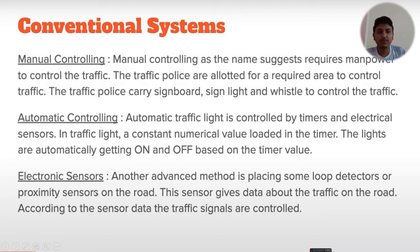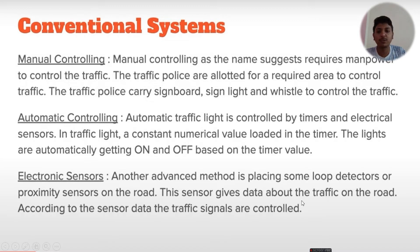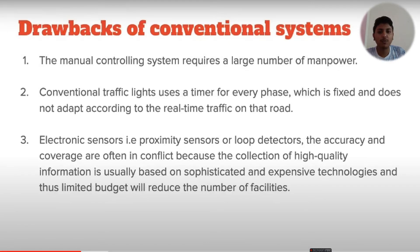Another advanced method is placing loop detectors or proximity sensors on roads. These sensors provide data about traffic on the road, and according to that sensor data, traffic signals are controlled. This has made it easier to handle traffic situations compared to purely manual methods.